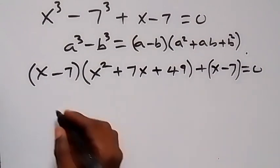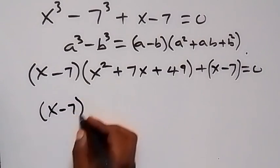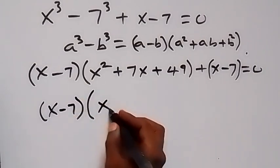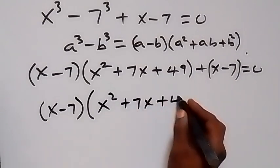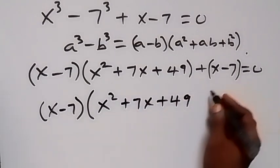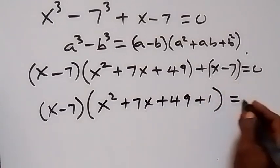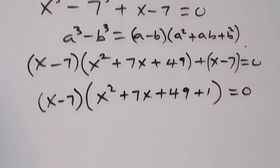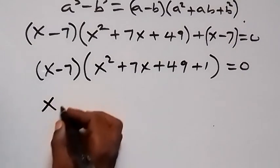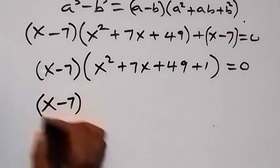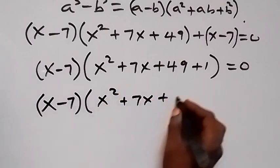Let's put x minus 7 in bracket as well. Now from here we have x minus 7 as a common factor. Taking it out, we have (x minus 7) multiplied by (x² plus 7x plus 49 plus 1) equals to 0.